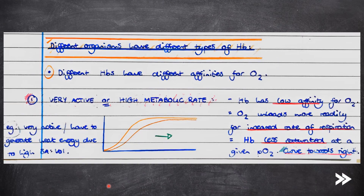Different types of haemoglobin in different organisms may have different affinities for oxygen. For example, if an organism is very active or has a high metabolic rate — for example, to generate lots of heat energy due to a very high surface area to volume ratio —